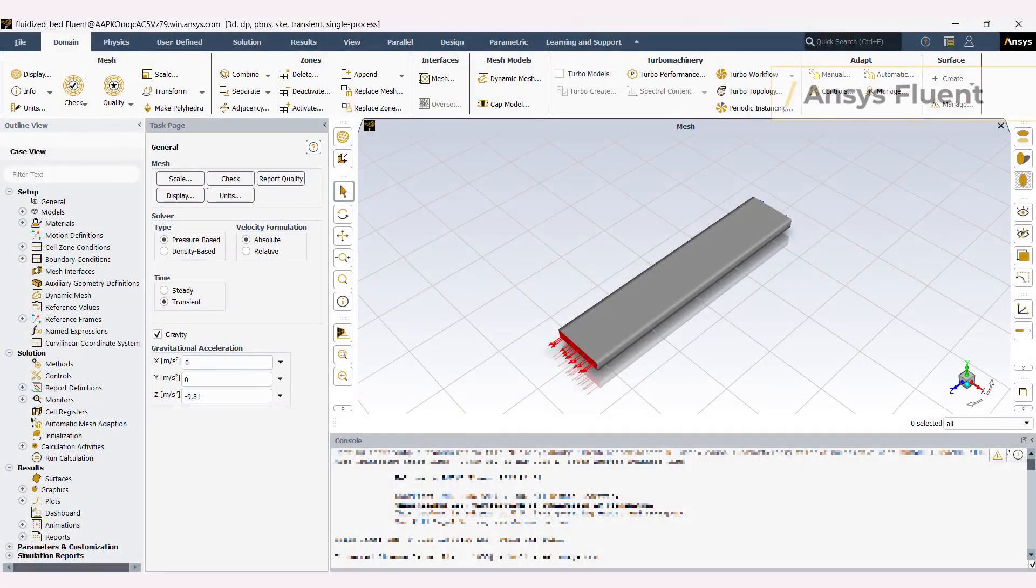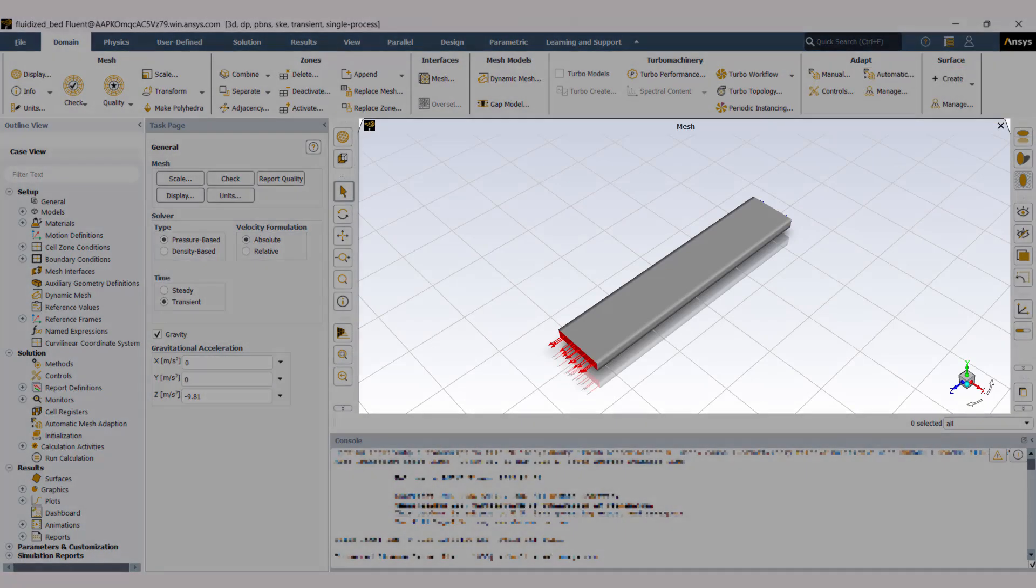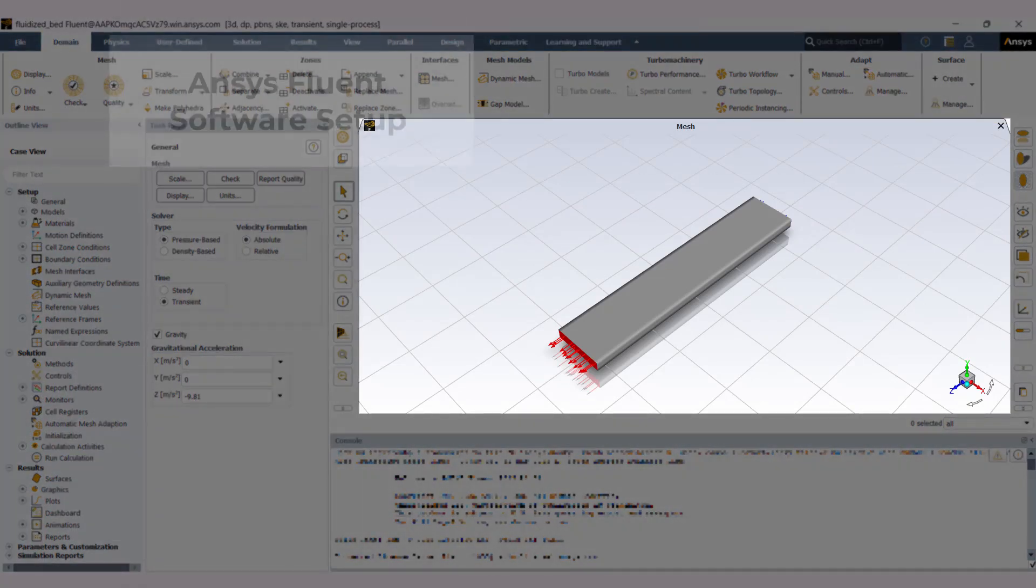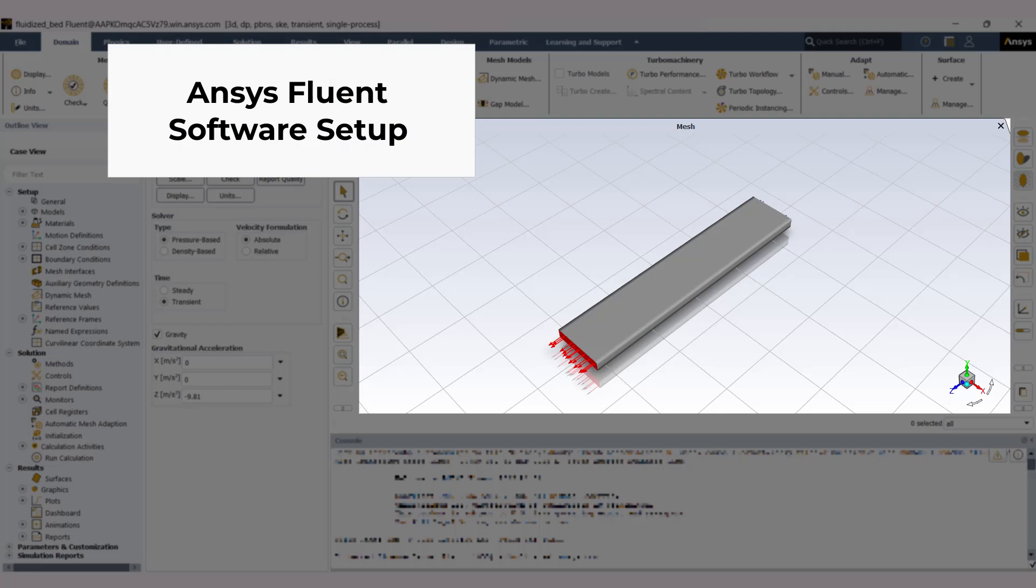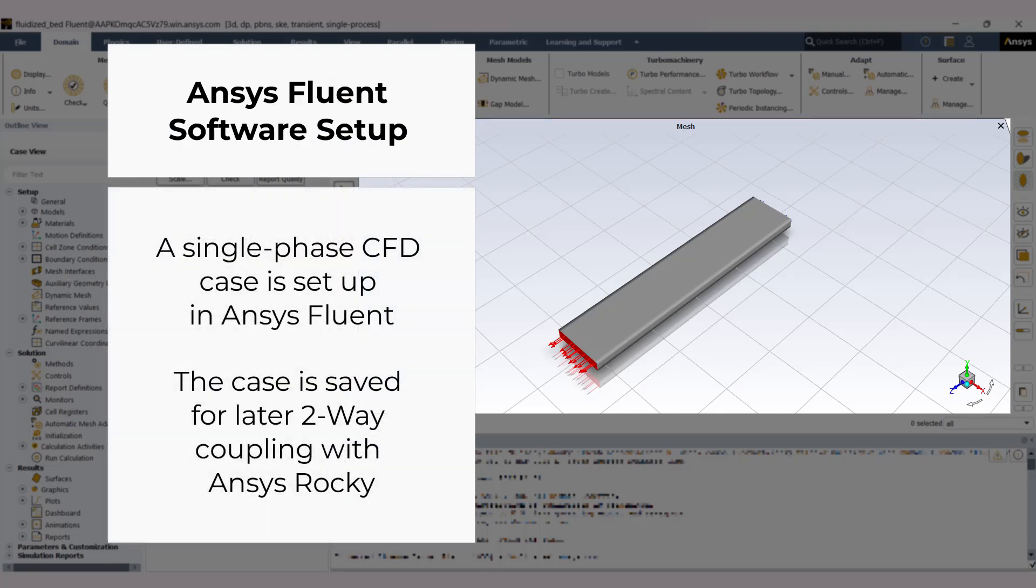Since the purpose of this lesson is to demonstrate how to use Rocky and CFD coupled simulations, we are going to use an already prepared CFD case to be coupled with ANSYS Rocky software. A single phase air CFD case with heat transfer is set up in ANSYS Fluent. The case is saved for later two-way coupling.